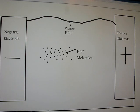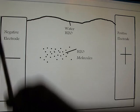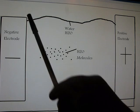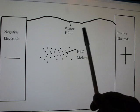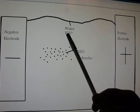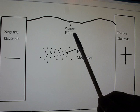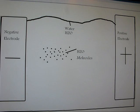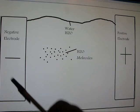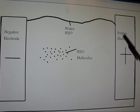Right, so as we did in our previous video, we had the container, we had the water, also known as H2O, two parts of hydrogen and one part of oxygen for one molecule of water. We've got the negative electrode, the positive electrode, and the water molecules.